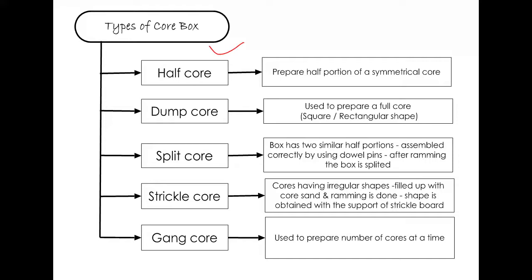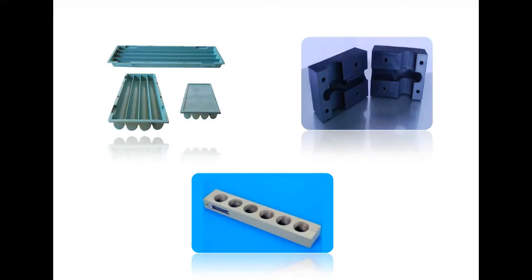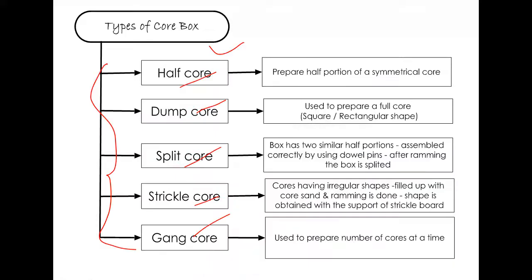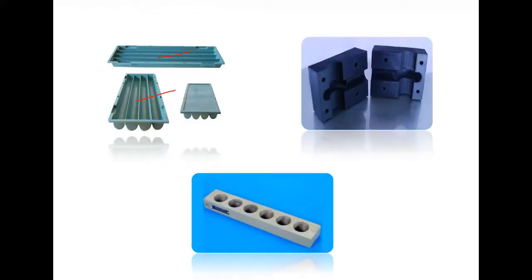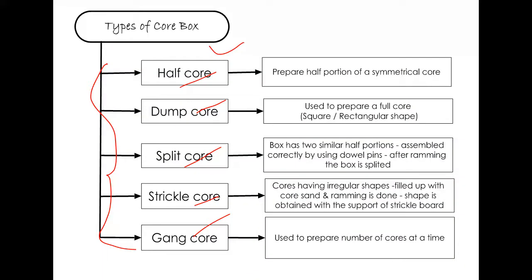Now we discuss the types of core boxes available. The core boxes are: half core, dump core, split core, strickel, and hat. Based on the application, you have to choose that core box. The half core box is used to prepare the half portion of a symmetrical core — a mirror image — and two halves are combined together. A dump core box is used to prepare a full square or rectangular shaped core.